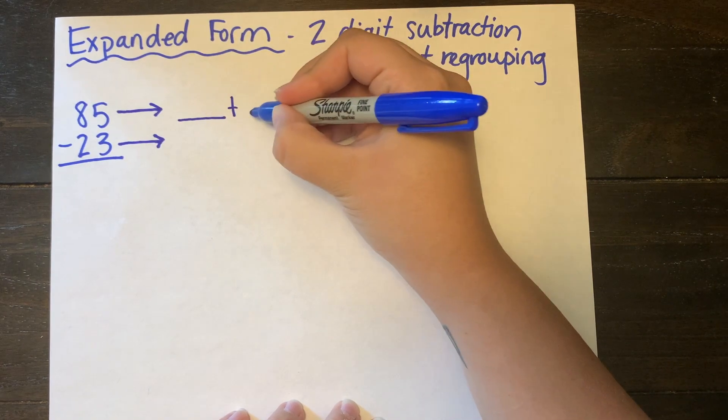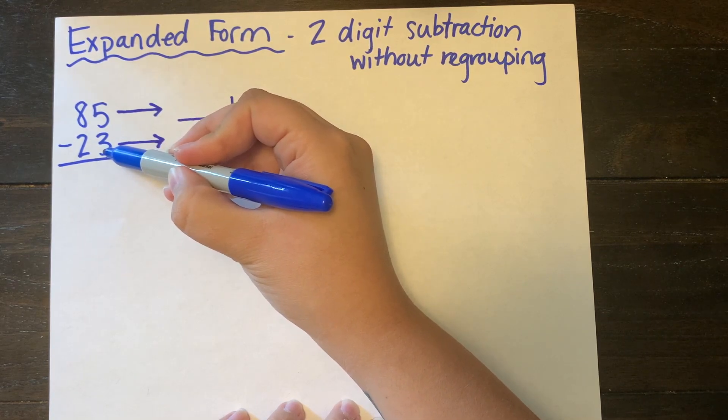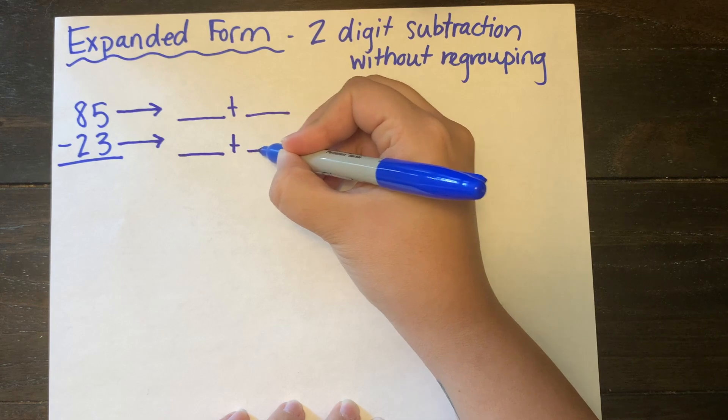I have a two-digit problem so I'm drawing two lines to represent each digit. So for 23 I have a line for my tens and a line for my ones.